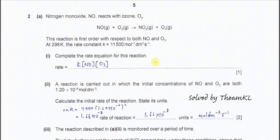Question 2A. Nitrogen monoxide reacts with ozone, and this is the equation. This reaction is first order with respect to NO and first order with respect to O₃, the ozone. This is very important information when we want to give the rate equation. The rate constant is given — this value is 11500. Part 1: complete the rate equation for this reaction.